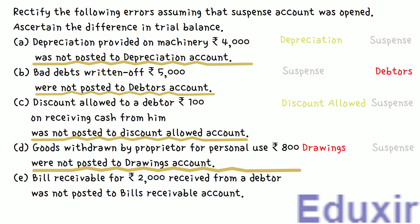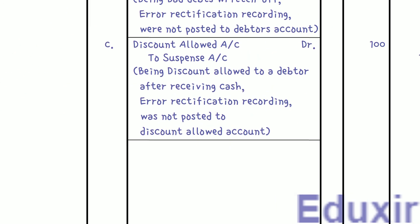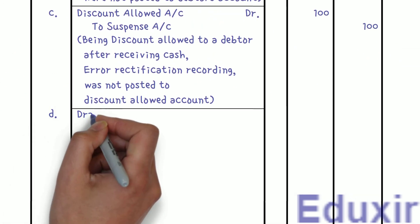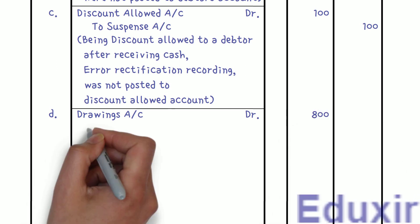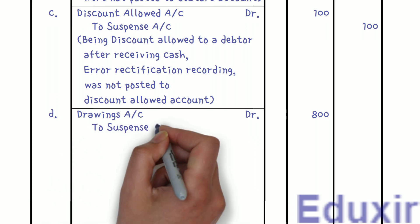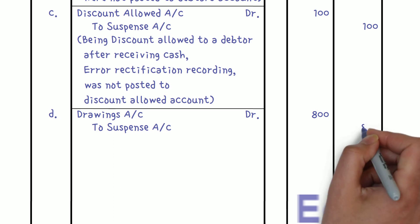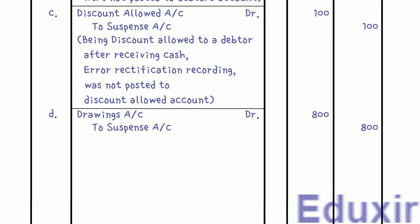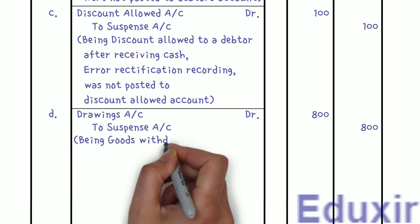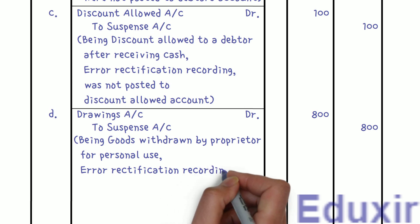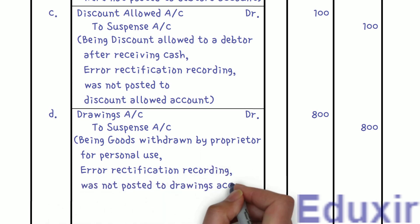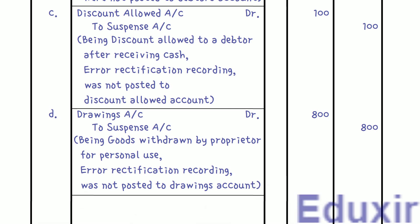Let us now record the journal entry. Drawings Account Dr — 800 rupees. To Suspense Account — 800 rupees. Narration: Being goods withdrawn by the proprietor for personal use; error rectification regarding amount not posted to Drawings Account. That completes the recording of these error rectification entries.